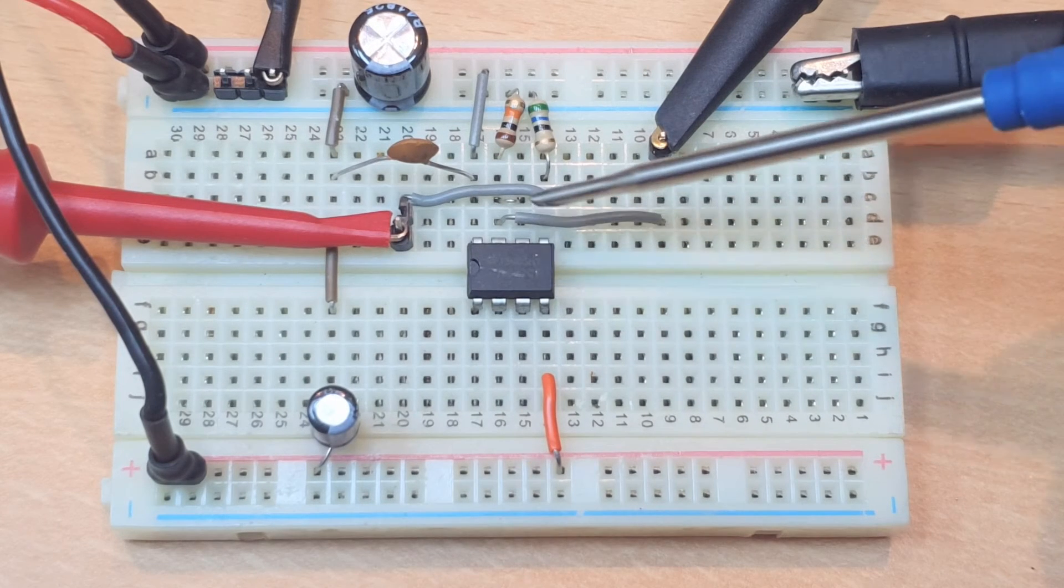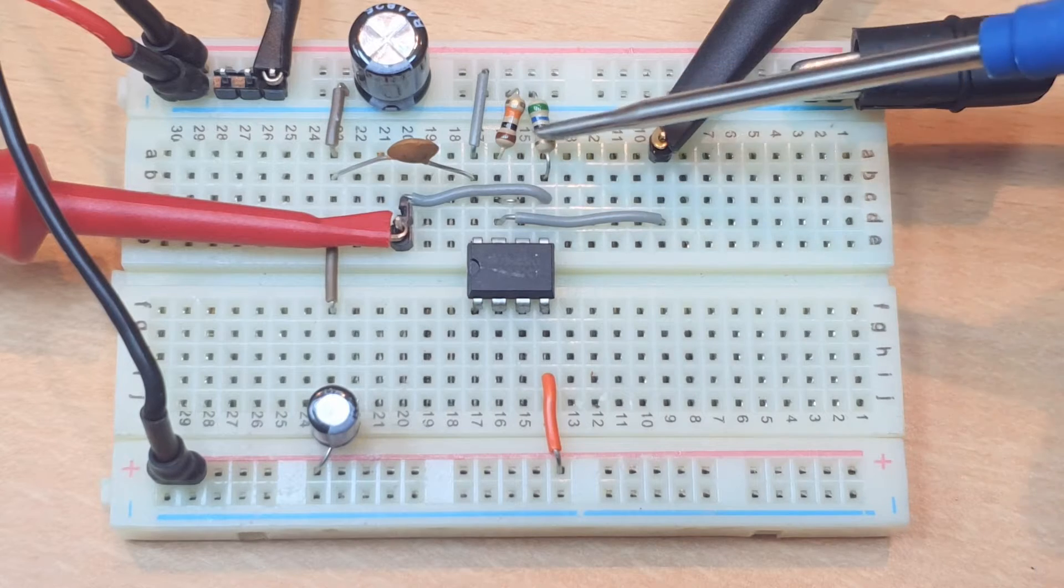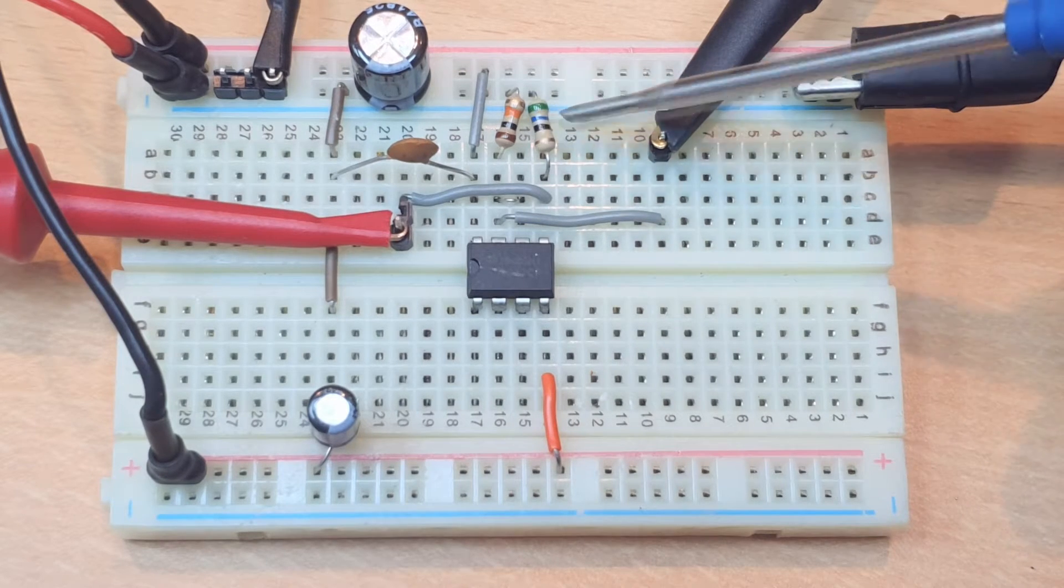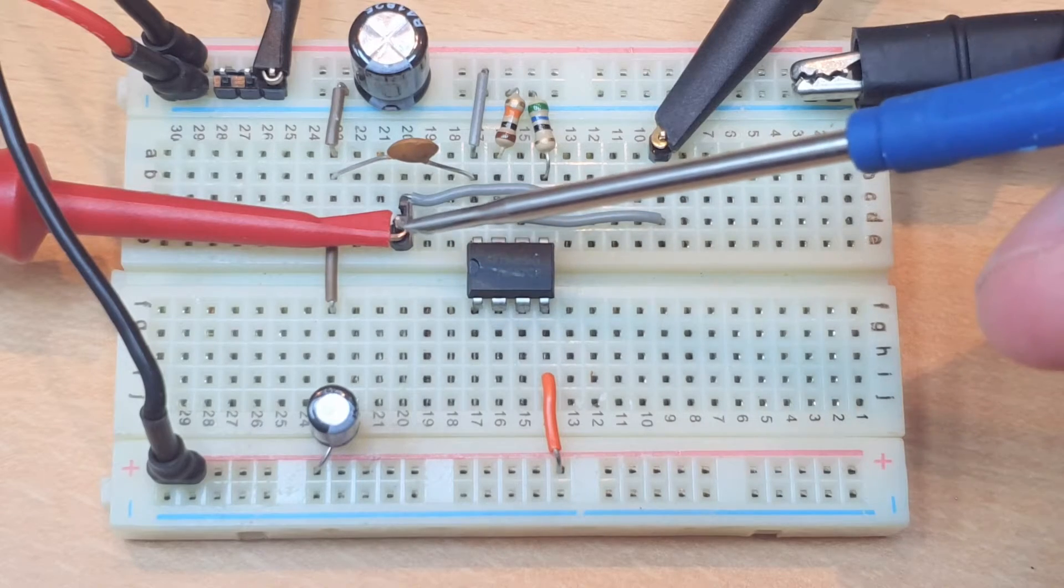The op-amp here is configured to a voltage follower configuration. We have a small load of 10k on the output and the 560 ohm resistor here is to better match the signal of the signal generator.